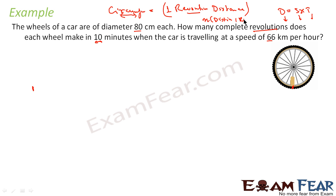Number of revolutions times distance covered in one revolution equals total distance covered. We know the circumference from the diameter, and we know the total distance from speed times time. So we can solve for the number of revolutions. That's the approach we will follow.